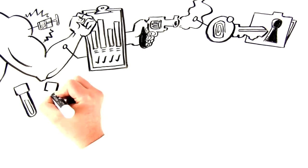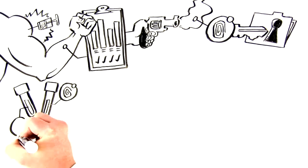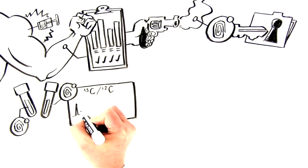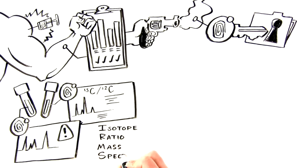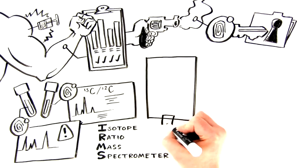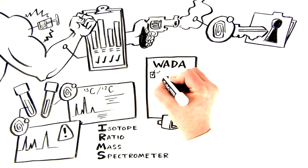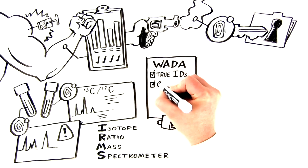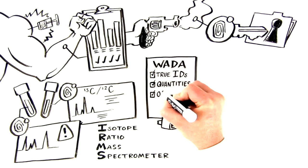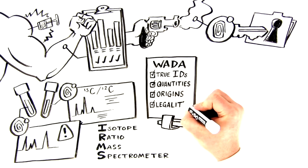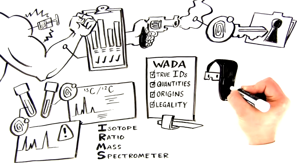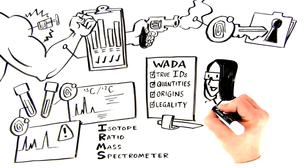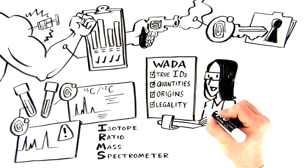Each sample you run has a unique chemical signature, its isotope fingerprint. In conjunction with thermoscientific peripherals, the isotope ratio mass spectrometer, or IRMS, allows you to measure the stable isotopes of sample compounds and establish precise fingerprint profiles. When urinary steroids reach your lab, you'll discern their true identities, quantities, origins, and most importantly, their legality under world anti-doping agency regulations.